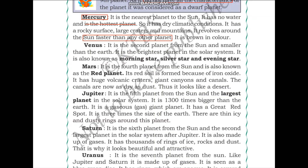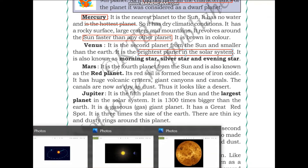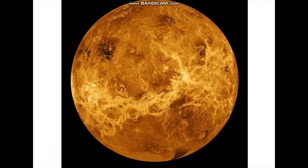Venus is the second planet from the sun and is similar in size to Earth. It is the brightest planet in the solar system as seen from Earth, and you can see it very bright in Earth's sky. The atmosphere of Venus is such that it traps the heat received from the sun — this is why Venus is the hottest planet in the solar system.